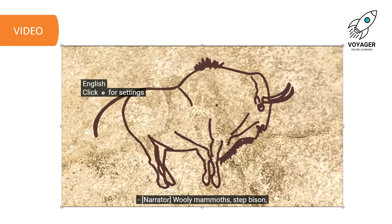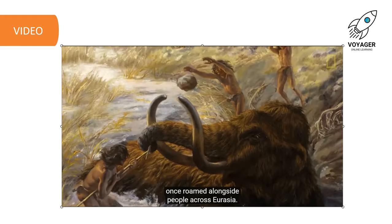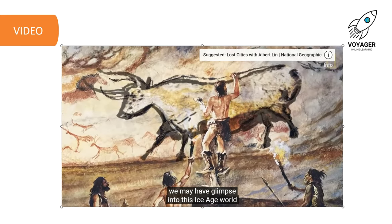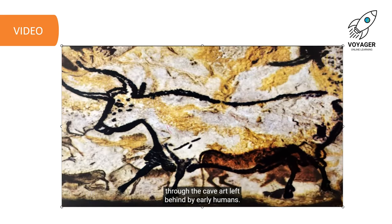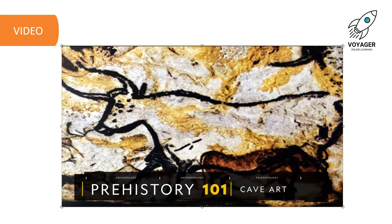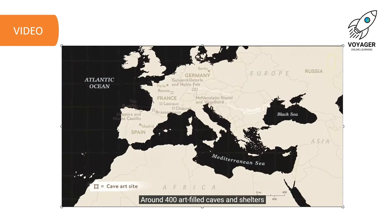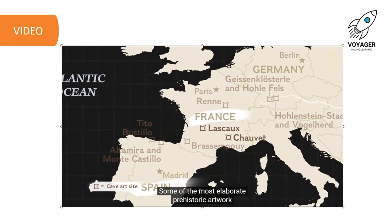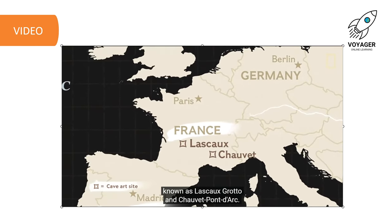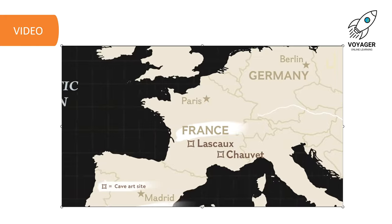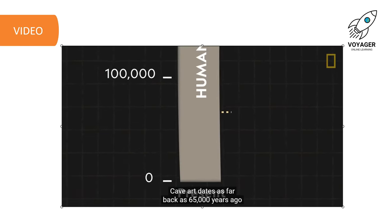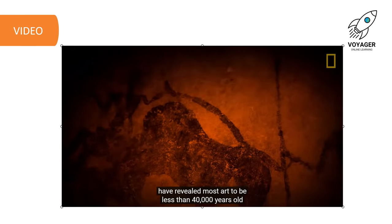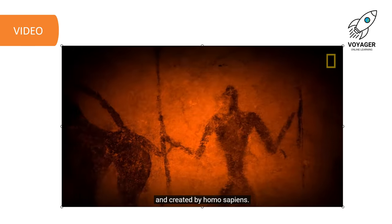Woolly mammoths, steppe bison and other large mammals once roamed alongside people across Eurasia. Tens of thousands of years later, we may have a glimpse into this Ice Age world through the cave art left behind by early humans. Around 400 art-filled caves and shelters, predominantly located in France and Spain, have been discovered so far. Some of the most elaborate prehistoric artwork exists in caves in France known as Lescaux Grotto and Chauvet-Pont-D'Arc. Cave art dates as far back as 65,000 years ago to the time of the Neanderthals, though radiocarbon dating has revealed most art to be less than 40,000 years old and created by Homo sapiens.